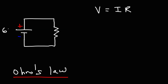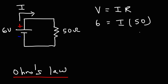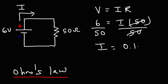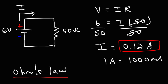Let's say we have a 6-volt battery and a 50-ohm resistor. What is the current flowing in this circuit? Using Ohm's law, we replace V with 6 and R with 50. Solving for I, we divide both sides by 50, giving us 6 divided by 50, which is 0.12 amps. Since 1 amp equals 1,000 milliamps, 0.12 amps is equal to 120 milliamps.